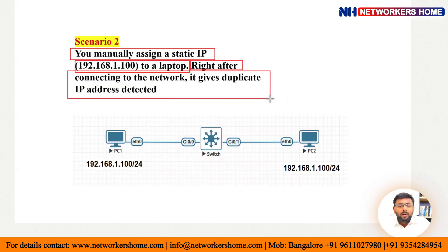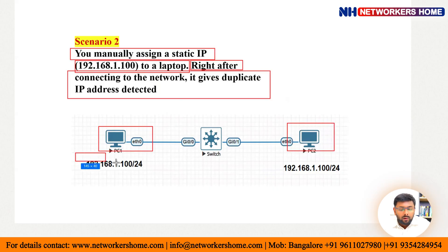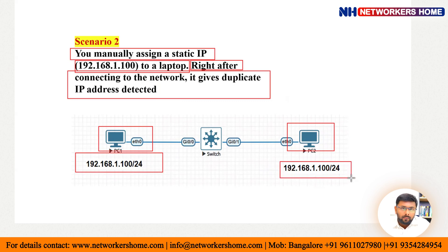Right after connecting to the network, it gives a message: 'Duplicate IP address has been detected.' How do we get this message and who helps generate it? We have a switch connected to PC1 and PC2. PC1 is configured with IP 192.168.1.100/24, and we will configure the same IP on PC2 as well. We'll discuss the configuration and what message we are going to get.